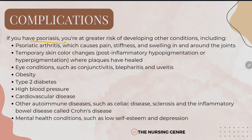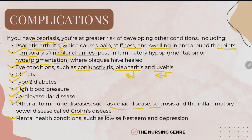If you have psoriasis, you are at greater risk of developing other conditions. These include psoriatic arthritis with joint pain, stiffness, and swelling; temporary skin color changes or hyperpigmentation; and eye conditions like conjunctivitis, blepharitis, and uveitis. Other complications include type 2 diabetes, high blood pressure, cardiovascular diseases, other autoimmune diseases like celiac disease, multiple sclerosis, and Crohn's disease, as well as mental health conditions such as low self-esteem and depression.